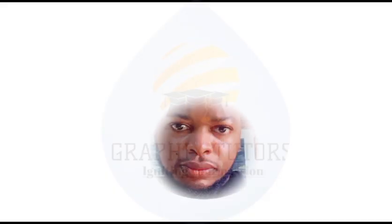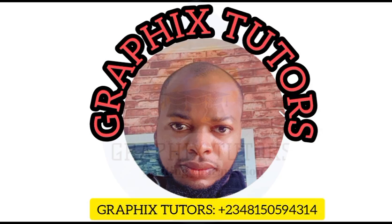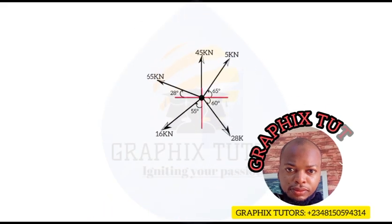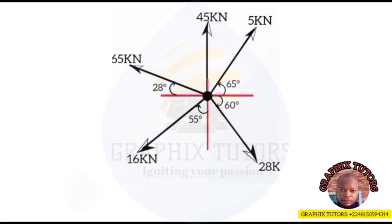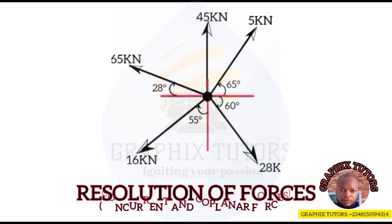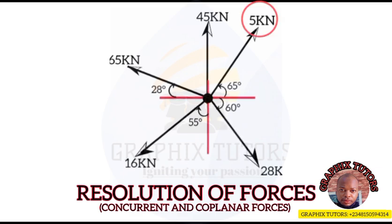My name is Graphics. If you look at the front of your screen you see a question and a diagram. The diagram is showing five forces acting at a point. These forces are concurrent forces because they act at a point called the point of concurrence, and they are also called coplanar forces because they are all on the same plane.